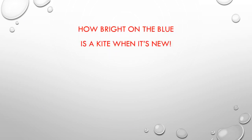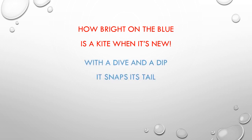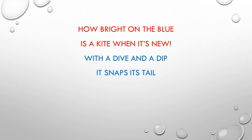How bright on the blue is a kite when it is new? 'Blue' means sky here — the kite looks very bright when it is flown in the sky. When a new, beautiful and colourful kite is flown, it makes the sky more beautiful. With a dive and a dip it snaps its tail. Dive means downwards, dip means to lift. When these dive and dip movements are made, the kite snaps its tail — meaning it moves its tail.